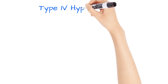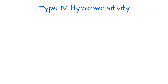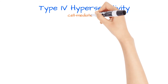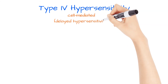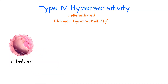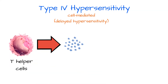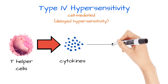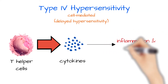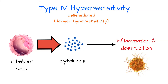In type 4 hypersensitivity, no antibodies are involved. It's a cell-mediated response, also known as delayed hypersensitivity, as it takes 24 to 48 hours to occur. This response causes T cells to overreact and overproduce cytokines, which leads to tissue inflammation and destruction by macrophages.